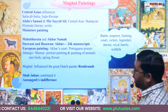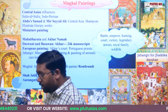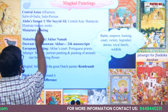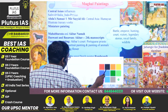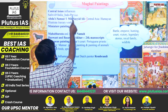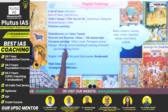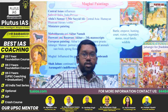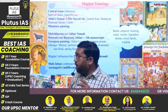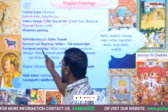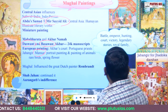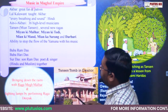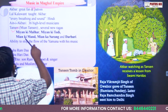Now talking about Mughal painting — the important persons are Abu Samad and Mir Sayyid Ali, who are very famous and worked under the time of Humayun and Akbar. Under Akbar, Daswanth and Basawan were important painters. Akbar had 24,000 paintings in his collection. You can see this painting here — these are the most important things under Mughal painting.